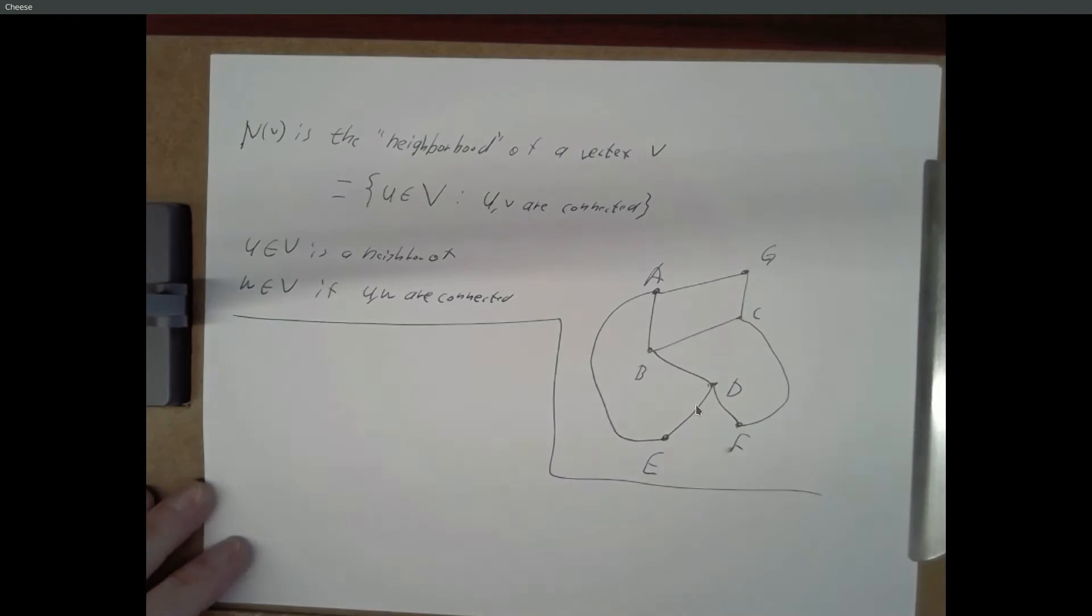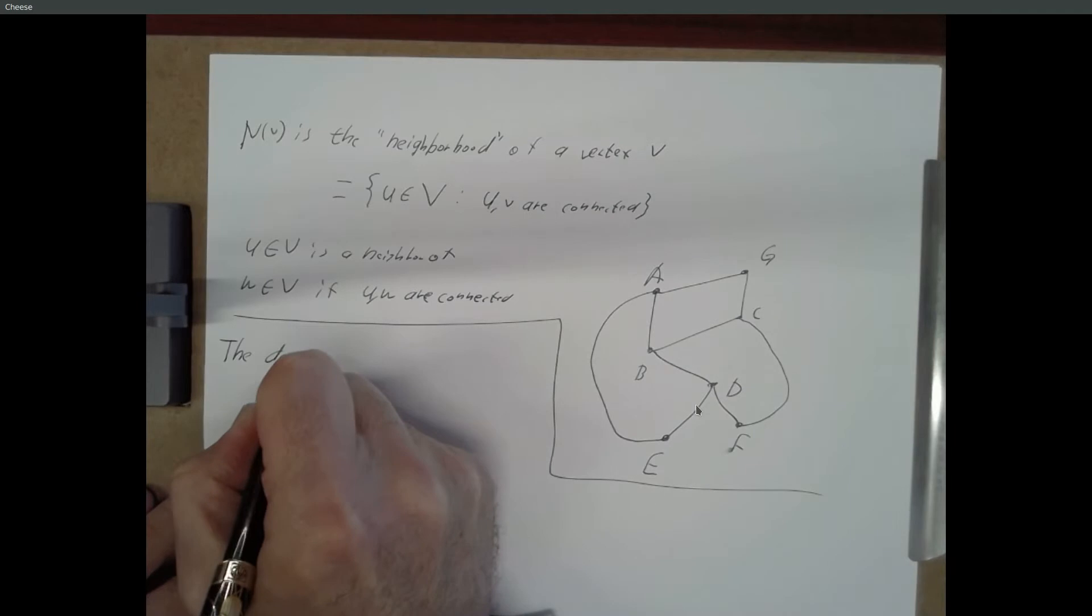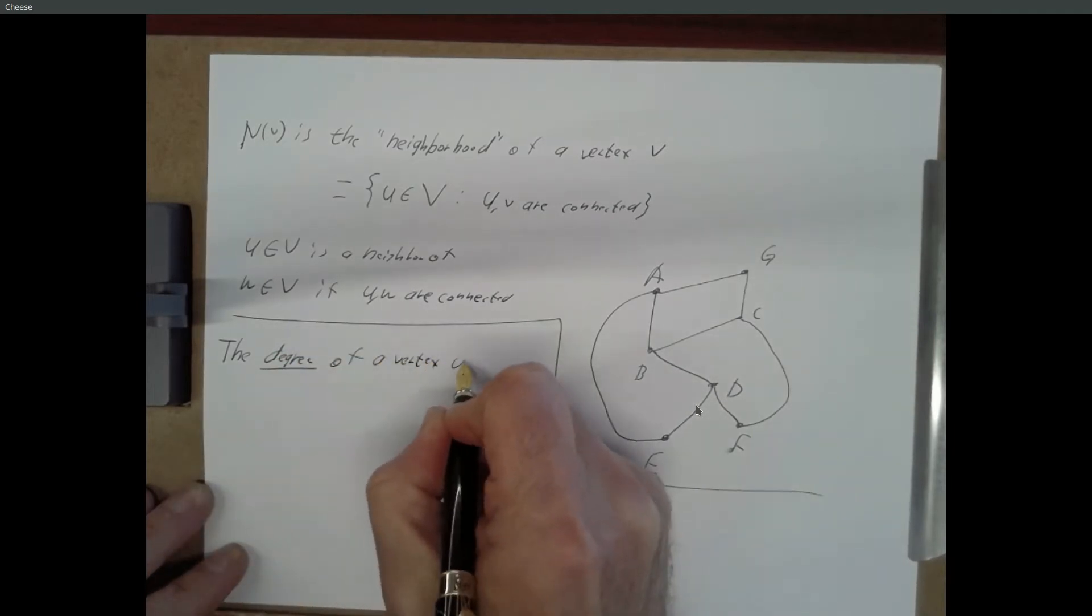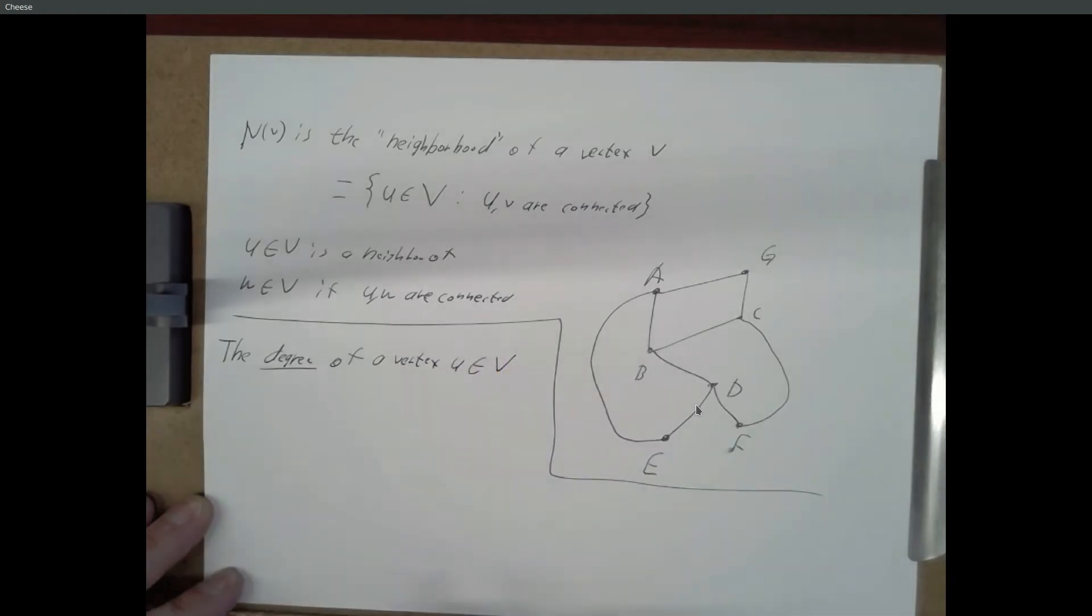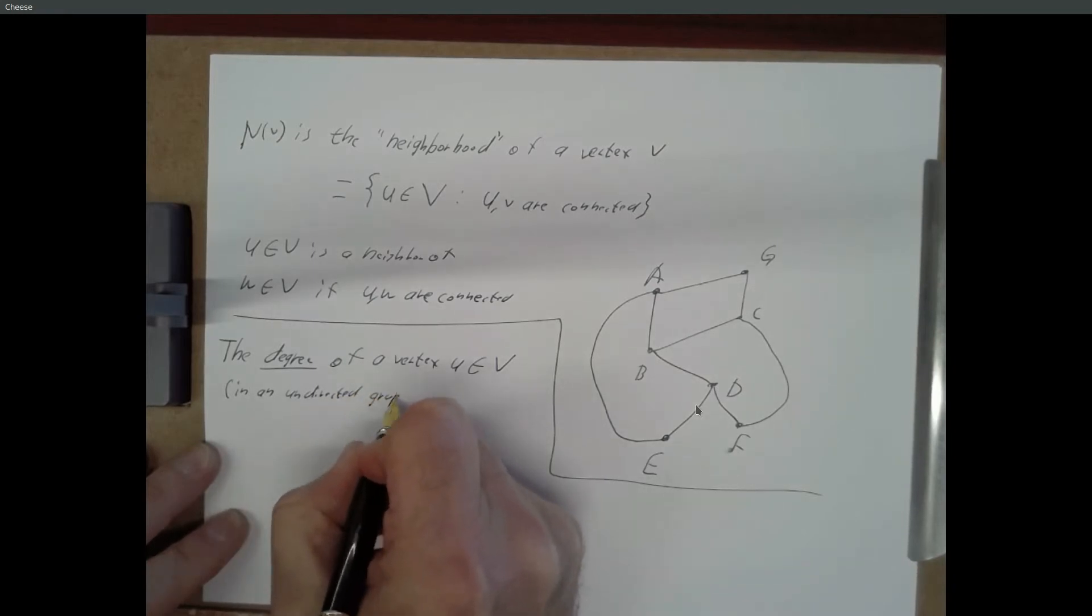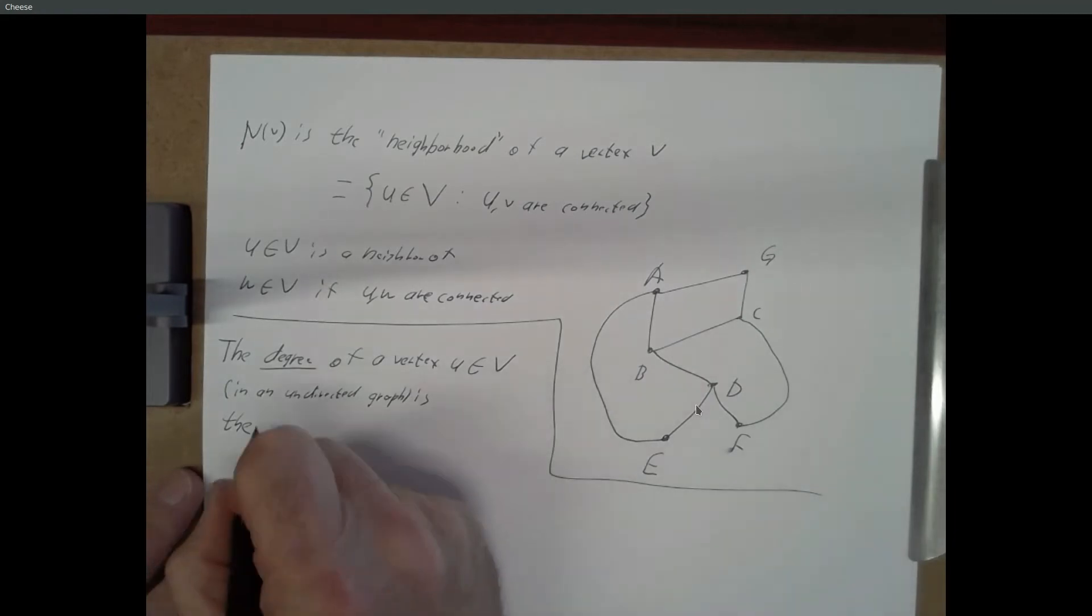A few more definitions. The degree of a vertex U. And here we're talking about in an undirected graph. So, the degree of a vertex is the number of edges incident to that vertex.